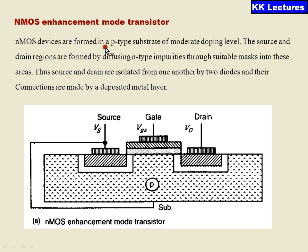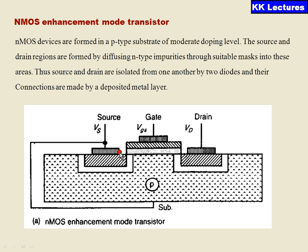The NMOS devices are formed in a p-type substrate of moderate doping level. The source and drain are isolated from one another by two diodes, formed by diffusing N-type material impurities through a suitable mask into these areas. If you observe the figure below, this is the NMOS transistor in enhancement mode, where N-type material is diffused into a p-type substrate and they are separated as two diodes.